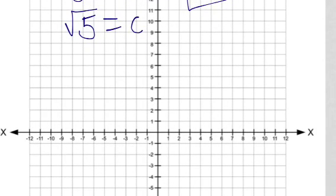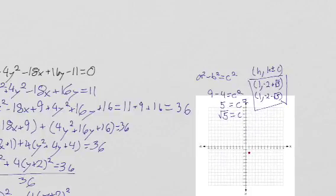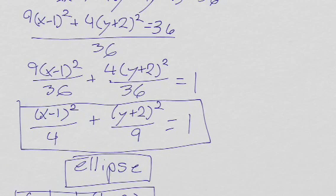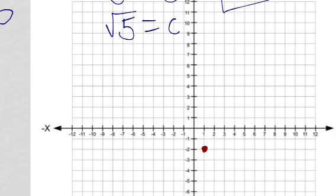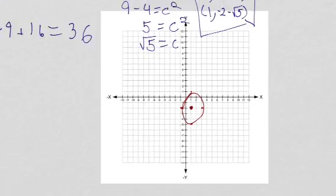Now that we have the graph, we know the center is at (1, negative 2), and we know that the semi-major axis will be 3 units long in the y direction, because the larger denominator is 9 and the square root of 9 is 3 — so we go 1, 2, 3 units up and down. The other axis has denominator 4, and the square root of 4 is 2, so that'll be 2 units in the x direction, giving us our ellipse shape.